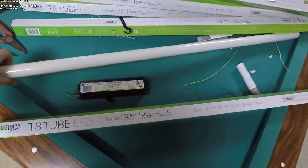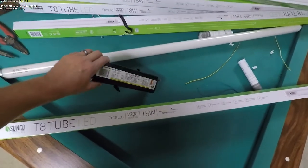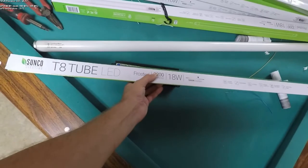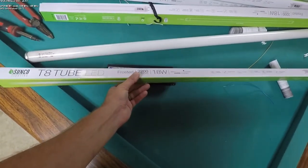We're going to take all the old fluorescent bulbs out, remove the ballasts, and wire up straight to these LED tubes. They fit right in the old holders.